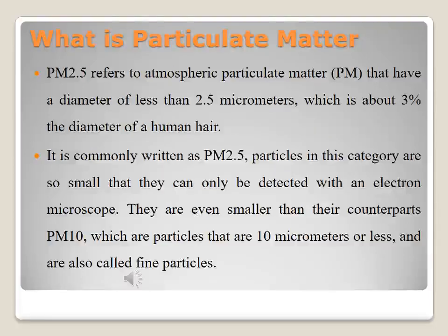Particulate matter 2.5 refers to atmospheric particulate matter with a diameter of less than 2.5 micrometers, which is about 3 percent of the diameter of a human hair. Particles in this category are so small they can only be detected with an electron microscope. They are even smaller than particulate matter 10, which are particles that are 10 micrometers or less, also called fine particles.